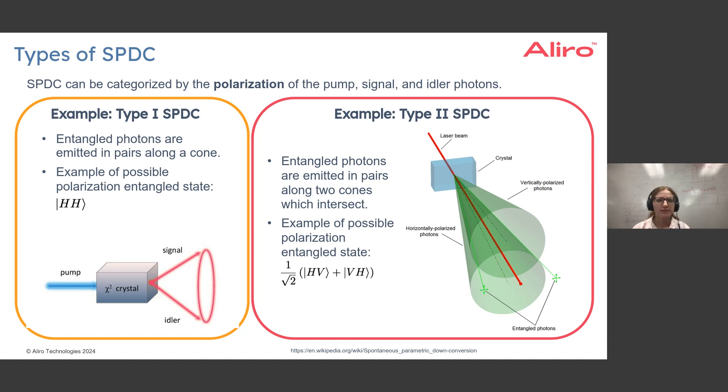For one example, for a Type 1 spontaneous parametric down conversion process, we have entangled photons that can be emitted in pairs along a cone. An example of the possible polarization entangled state you might get out is |HH⟩ where H is horizontally polarized.